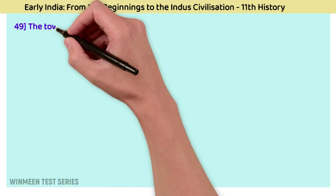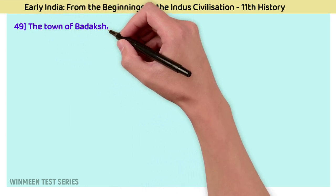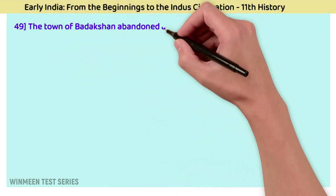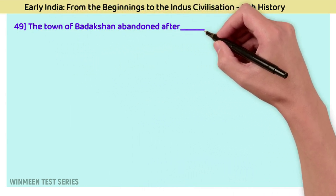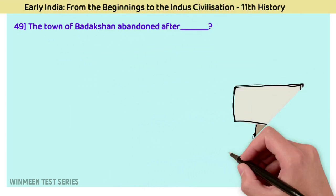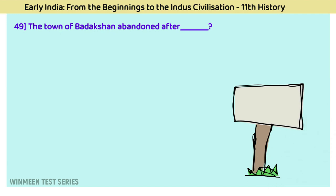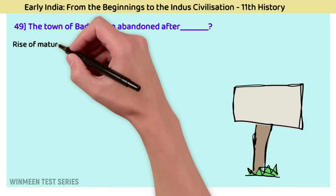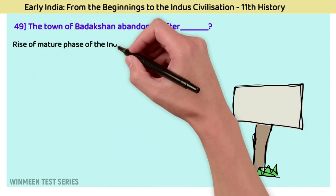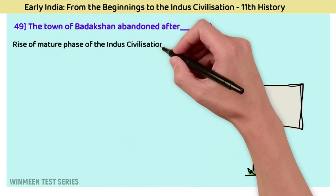Question 49: The town of Badakshan was abandoned after? The answer is the rise of the mature phase of the Indus civilization.